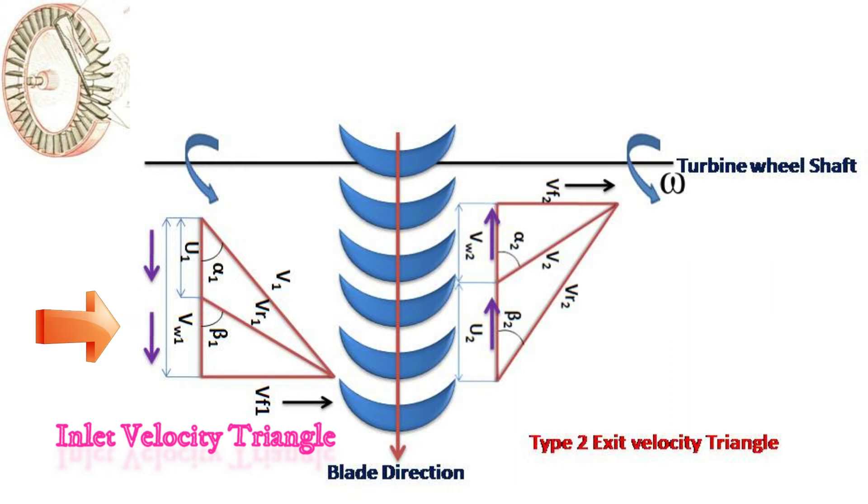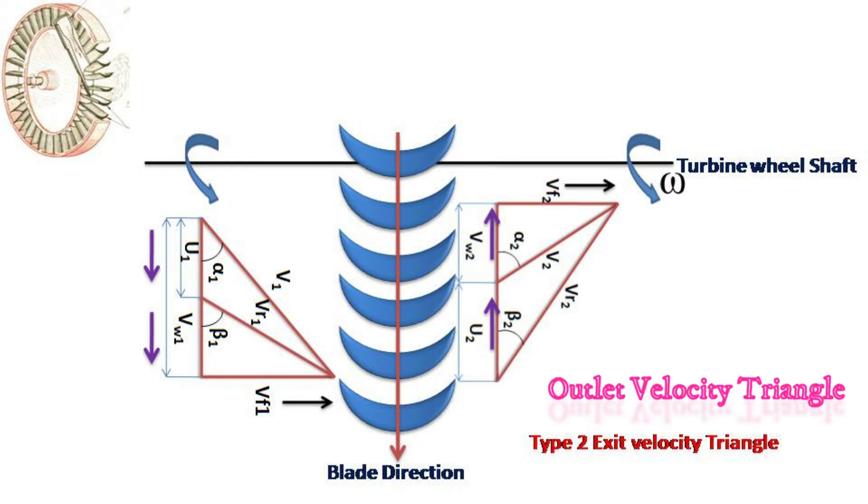Inlet velocity triangle is shown at the left side and the outlet velocity triangle shown at the right side of the blade, which means the fluid is flowing from left to the right through this turbine.